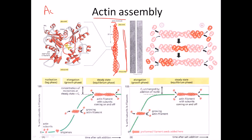Whenever the ATP is hydrolyzed to ADP, the actin protein becomes really unstable and will dissociate. That is how the whole process works. During actin assembly, in the very first step, the first few actin proteins along with ATP come together to form a nucleus — we call it the actin nucleus. After the formation of the actin nucleus, further sets of actin proteins come in and attach.